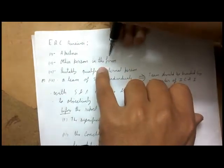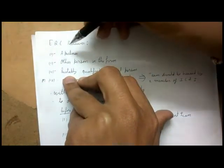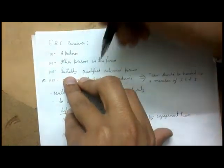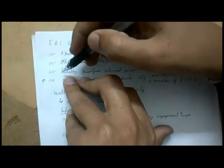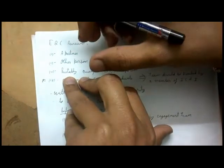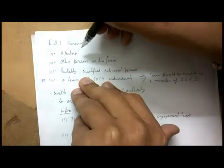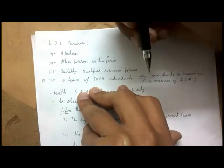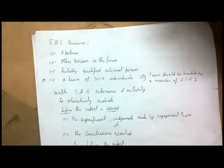Who is an Engagement Quality Control Reviewer? The EQCR can be a partner, any other person within the firm, or a suitably qualified external person. These three types of individuals can serve as EQCR. Alternatively, it can be a team of such individuals, but in that case the team must be headed by a member of the Institute of Chartered Accountants of India.